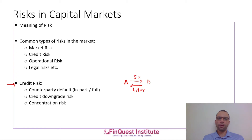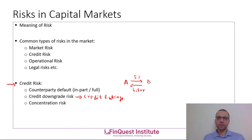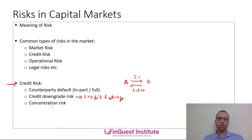Counterparty default is tied to credit ratings — a drop in a company's credit rating means its creditworthiness has declined, which is a credit risk from the market's perspective. Next is concentration risk, which means your portfolio is concentrated around specific sectors or specific issuers in an industry. This is not an exhaustive list, but these are the most prominent credit risk components.